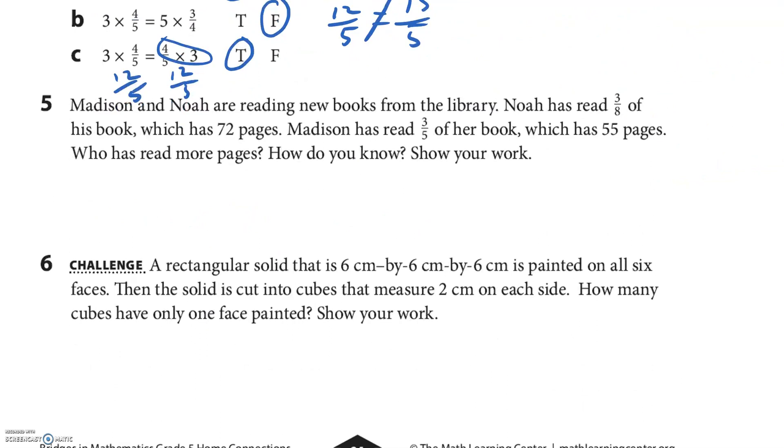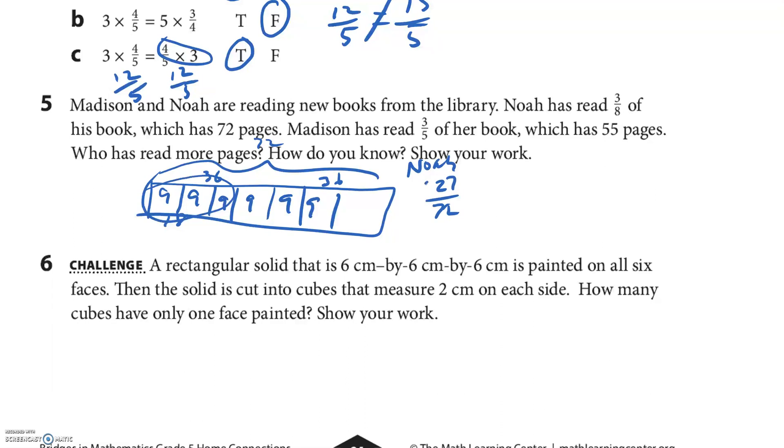Madison and Noah are reading books from the library. Noah has read three-eighths of his book, which is seventy-two pages. I'm going to break my seventy-two into eighths. The whole thing is seventy-two. Half of that is thirty-six. Half of thirty-six is eighteen. And half of eighteen is nine. And they said we're looking for three-eighths. So we just take three of them. So Noah has read twenty-seven out of seventy-two pages.